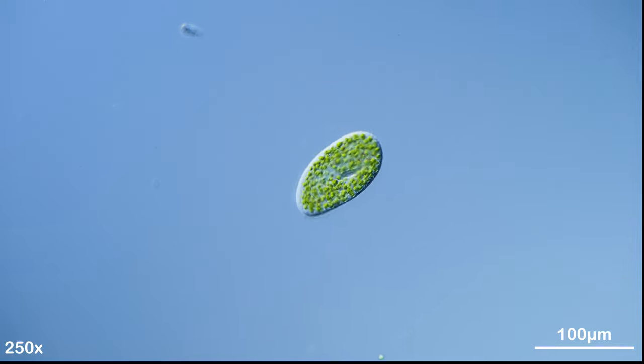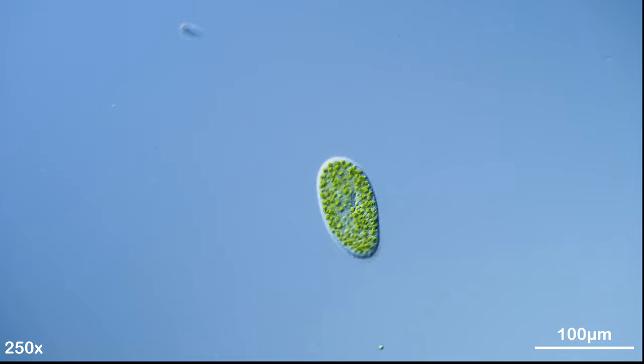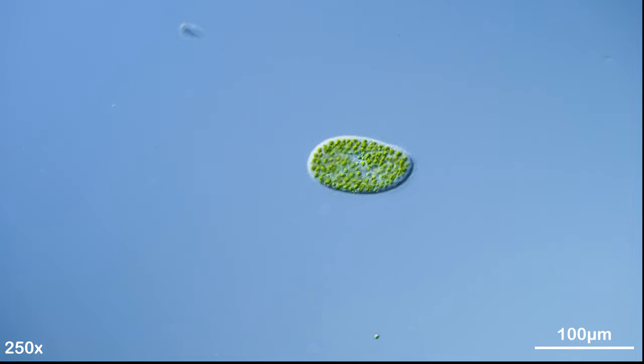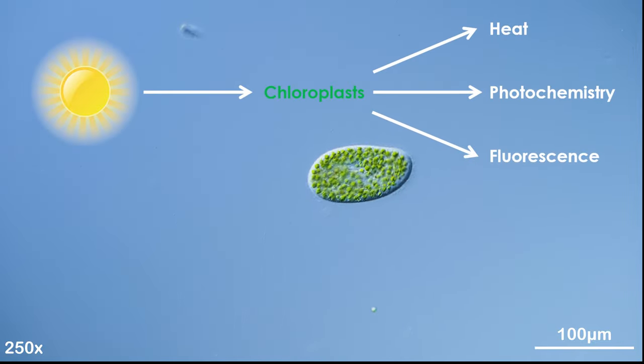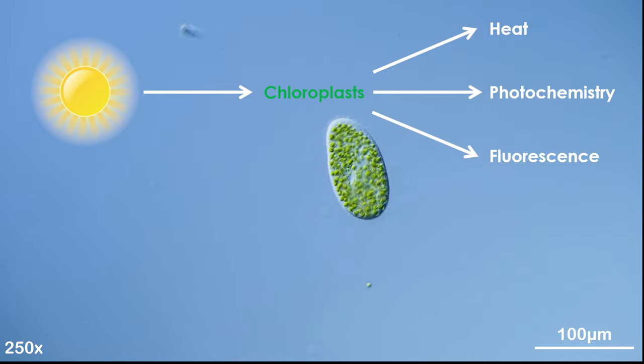However, excess light can damage the algae through the production of reactive oxygen species inside the chloroplasts. Therefore, plants can quench excess excitation of chlorophyll molecules by either increasing the rate of photosynthesis, re-emitting the excited energy as fluorescence, or dissipating it as heat.